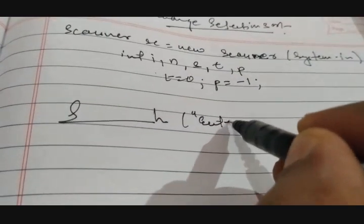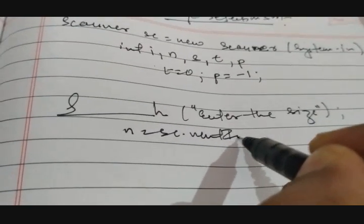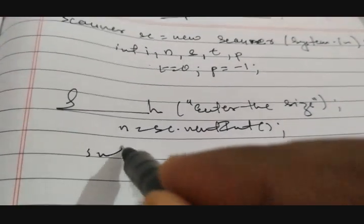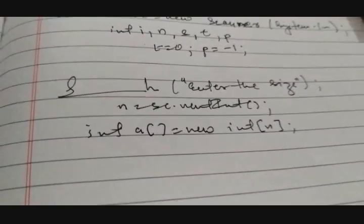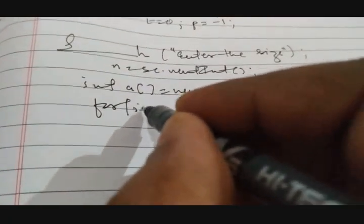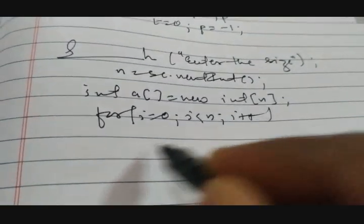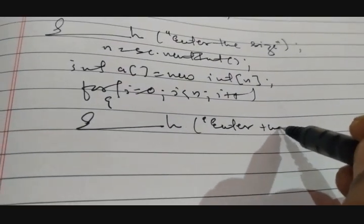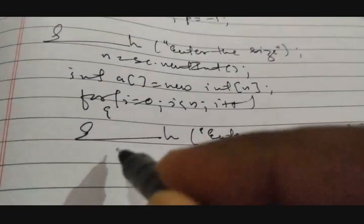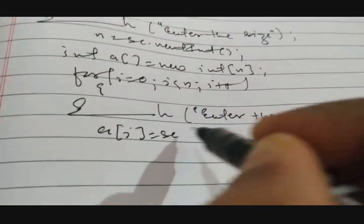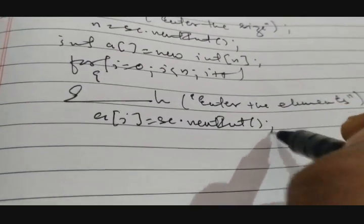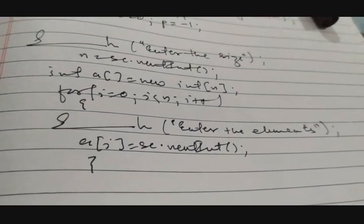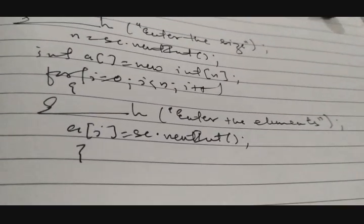Print: enter the size. n equals to sc.nextInt(). Create an array: int array[] equals to new int[n]. Print: insert array elements. For i equals to 0, i less than n, i++: a[i] equals to sc.nextInt(). Now you have the array.